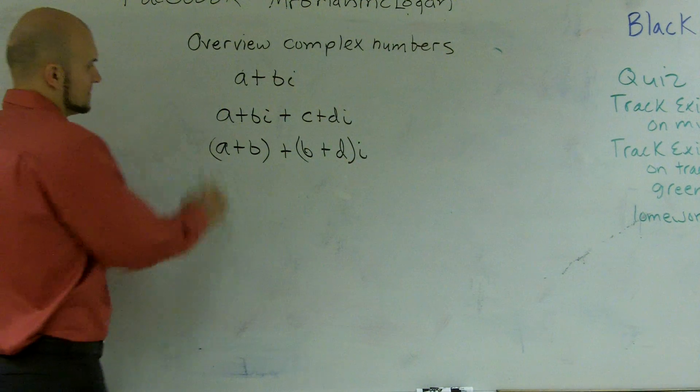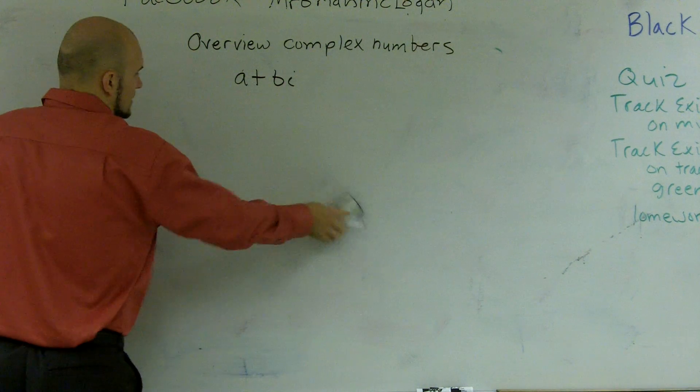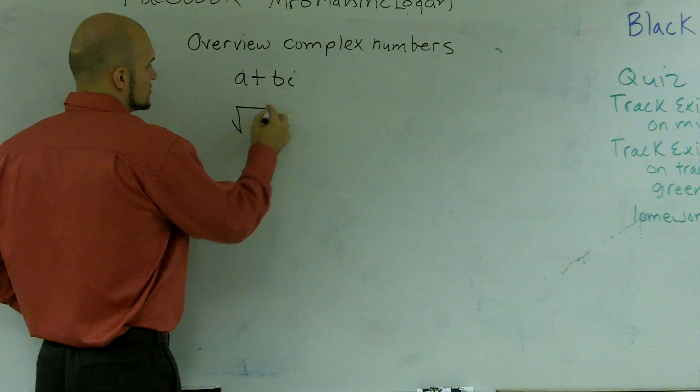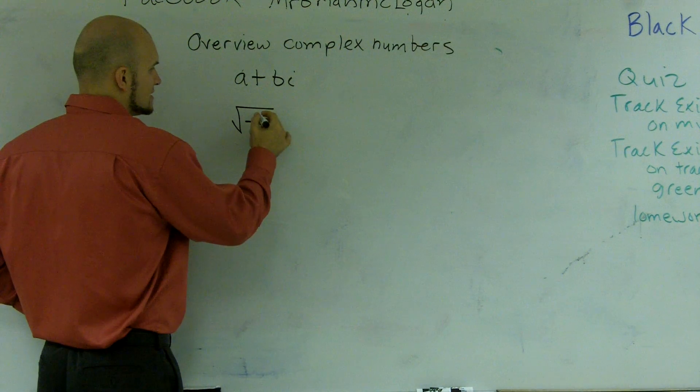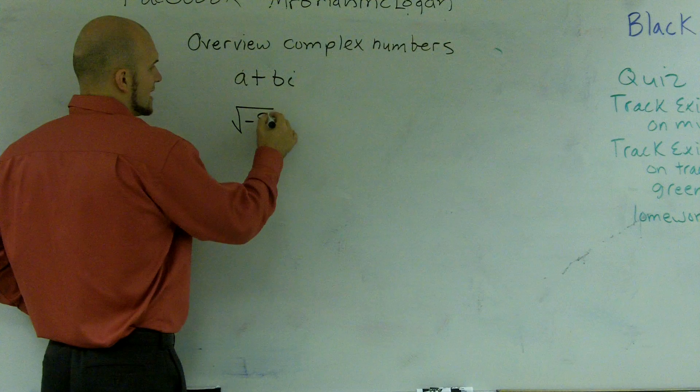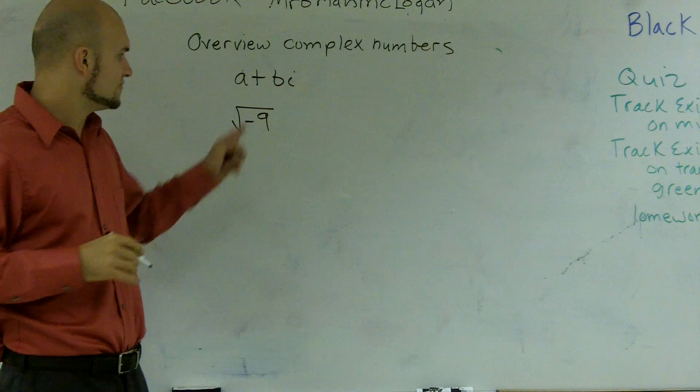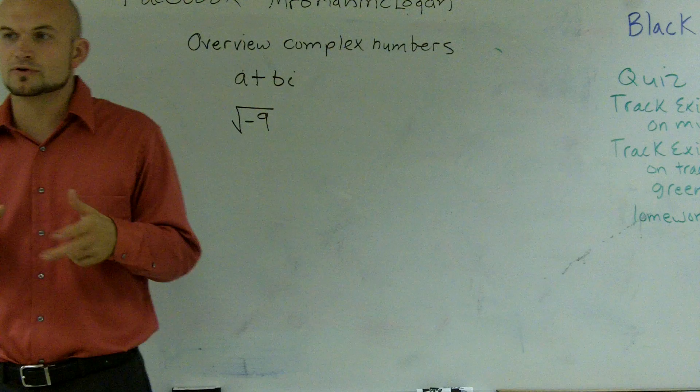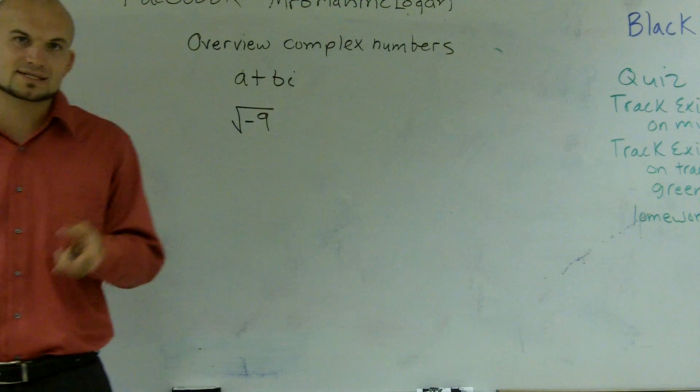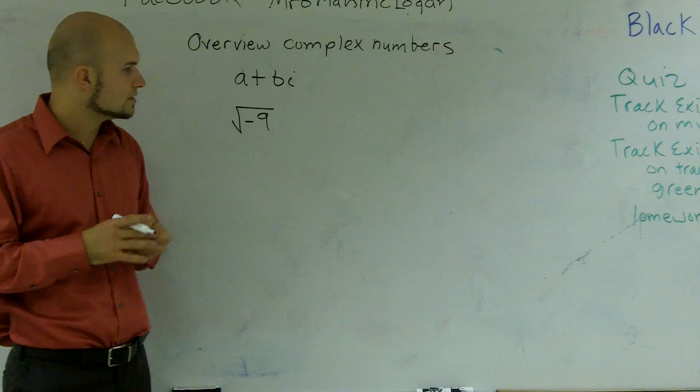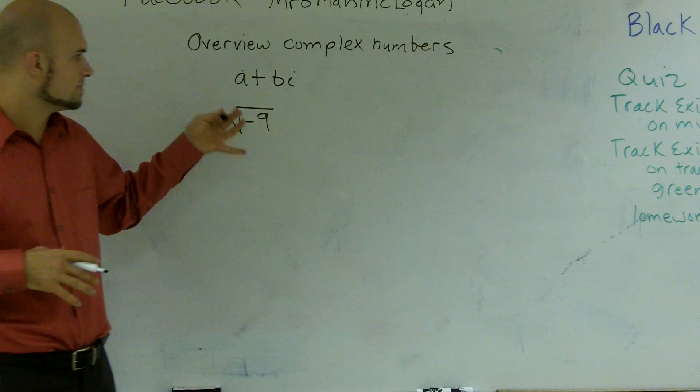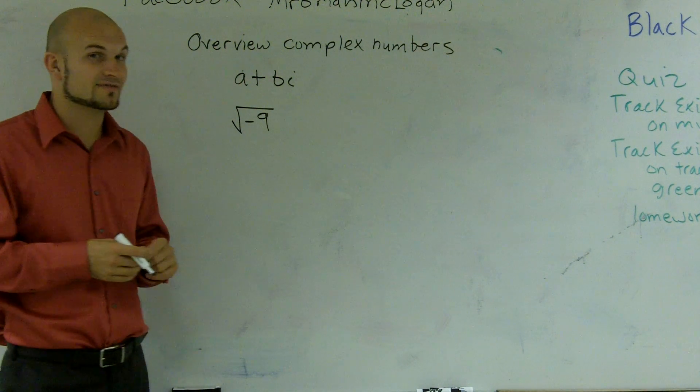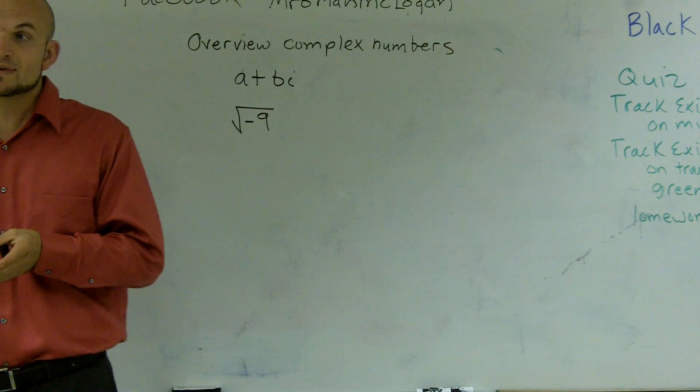So let's talk about i. Now, some of you might in your math career come to a problem where you get a square root and you get a negative number, let's just say negative 9. And what you figure out is there's no number that is exactly the same. Remember, square root is the exact same number multiplied by itself to get 9. So what number multiplies by itself to get 9? Well, that'd be 3.